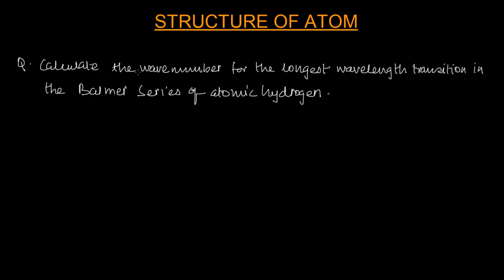Let's try to solve this question: calculate the wave number for the longest wavelength transition in the Balmer series. What is the Balmer series? The Balmer series is the transition from any higher level down to the second level.